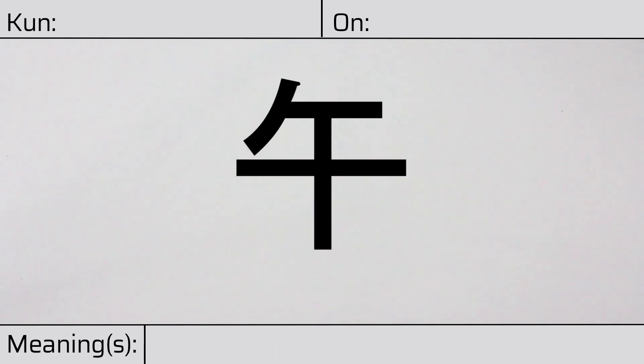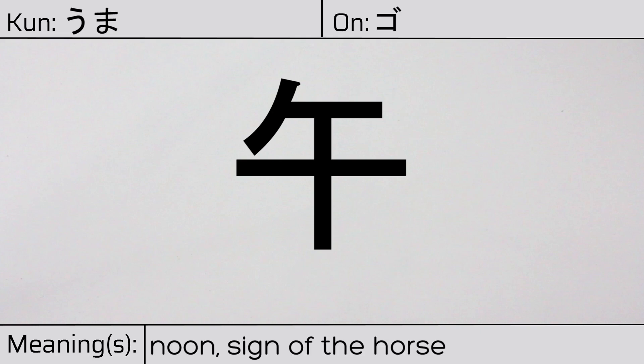Welcome to this lesson on Japanese kanji. Today, we'll be discussing this character. This kanji has a kunyomi or Japanese reading of uma, and it has an onyomi or Chinese reading of go. This character has the meanings noon, sign of the horse, the seventh sign of the Chinese zodiac. Here is the stroke order.